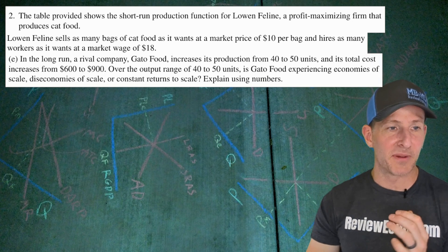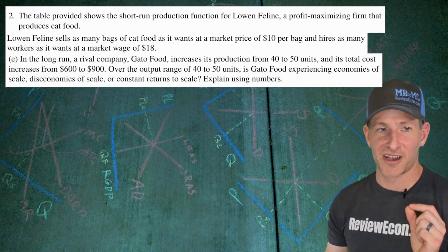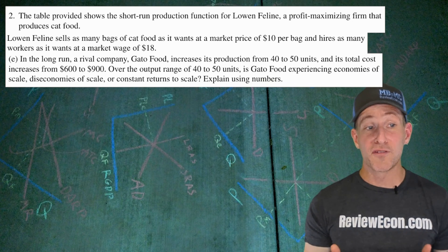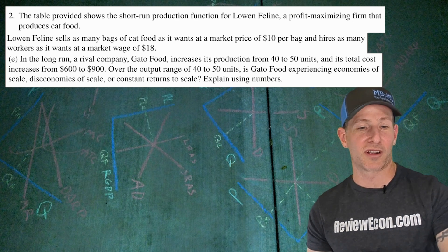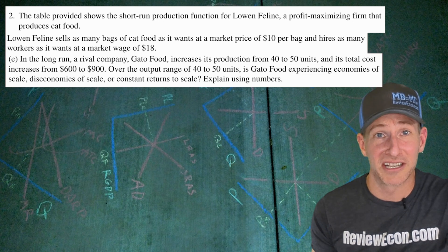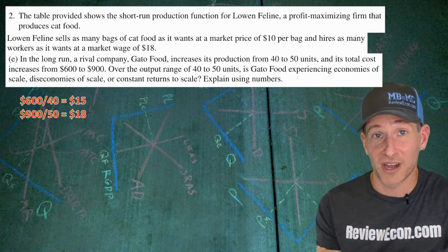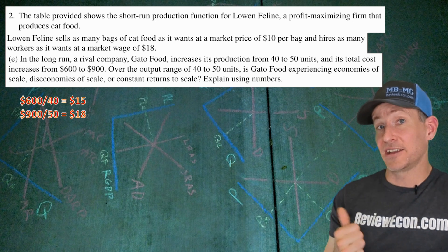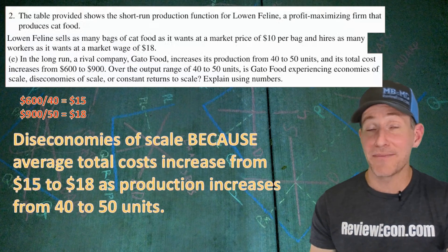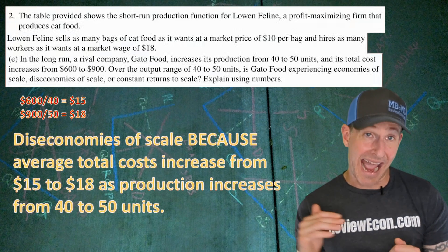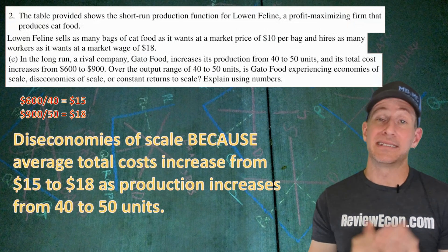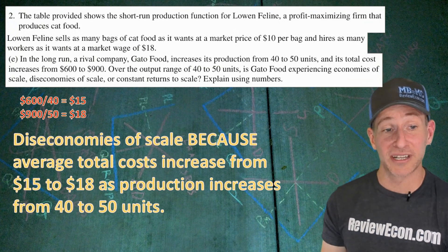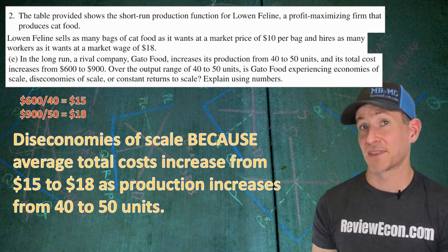Part E: In the long run, a rival company, Got Gato food, increases its production from 40 units to 50 units, and its total costs increase from $600 to $900. Are they experiencing economies of scale, diseconomies of scale, or constant returns to scale? We calculate the average total cost: at 40 units it's $15, and at 50 units it's $18. The average total cost is rising, so the answer is diseconomies of scale.